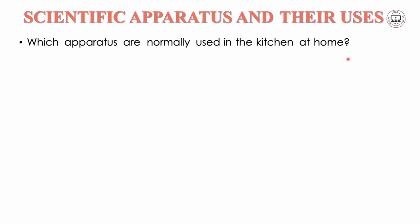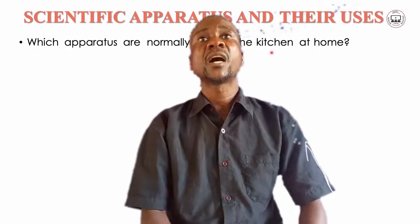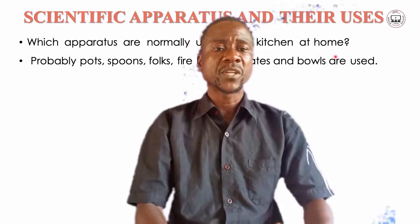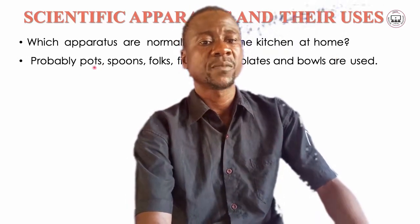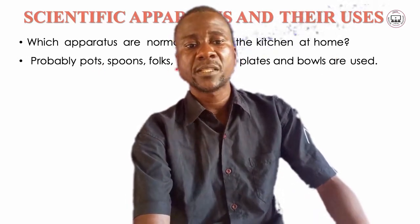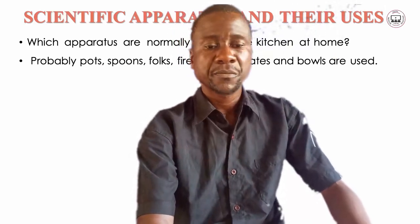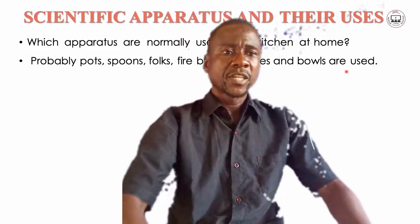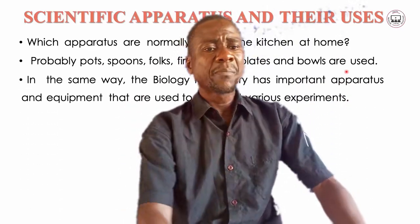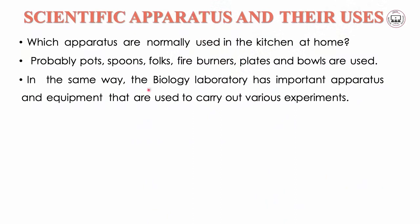For example, consider the apparatus you use in the kitchen at home — spoons, forks, fire burners, plates, and bowls. In the same way, when you go to the laboratory, the biological laboratory also has important apparatus and equipment used to carry out various experiments. We are going to discuss them so that you understand how to draw them.